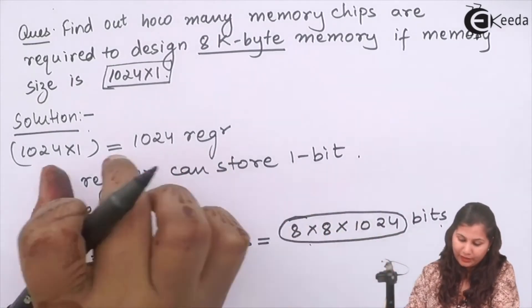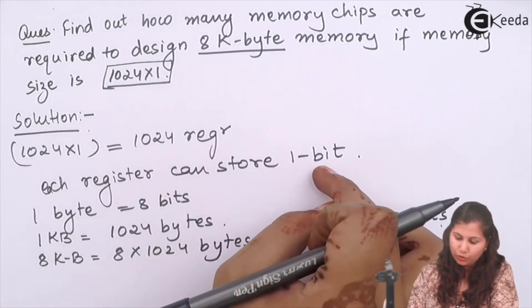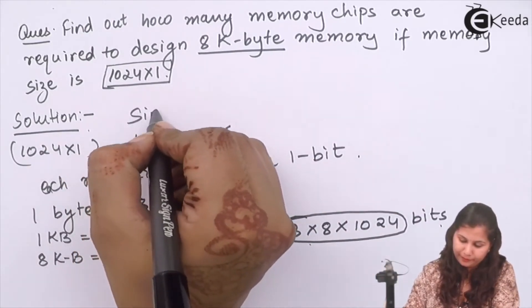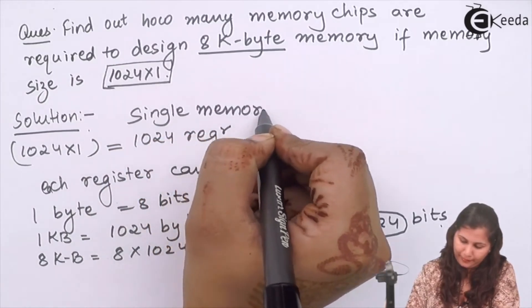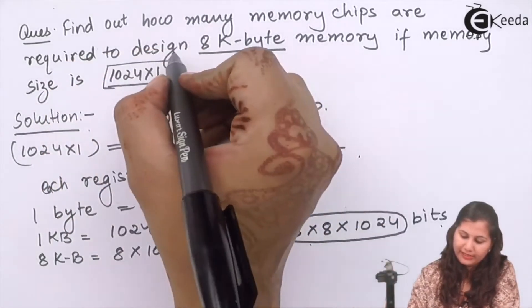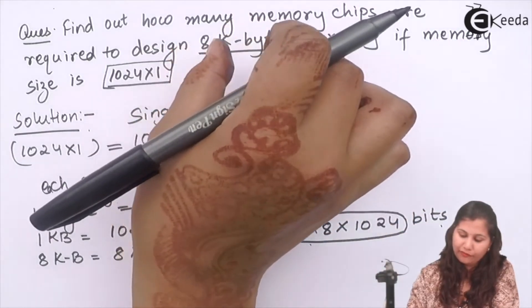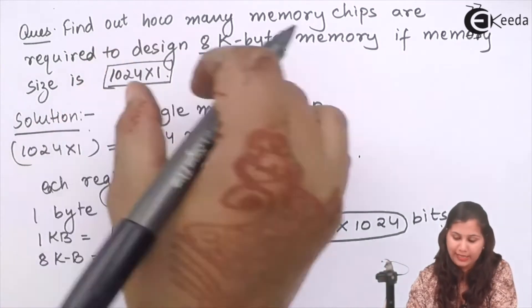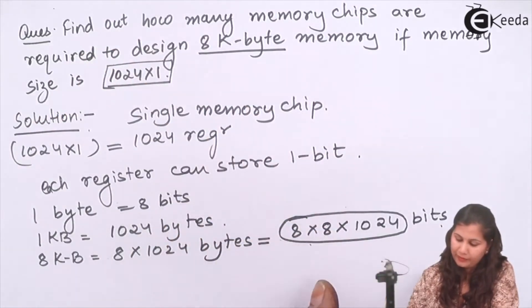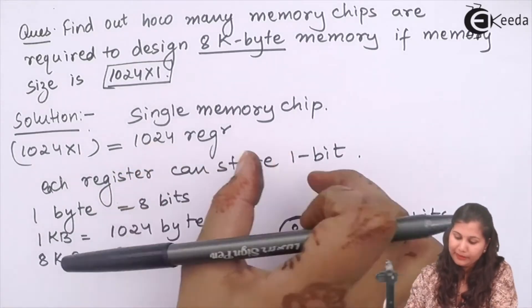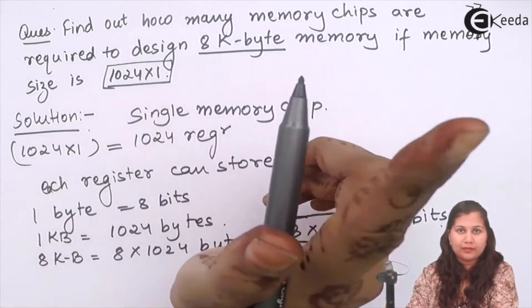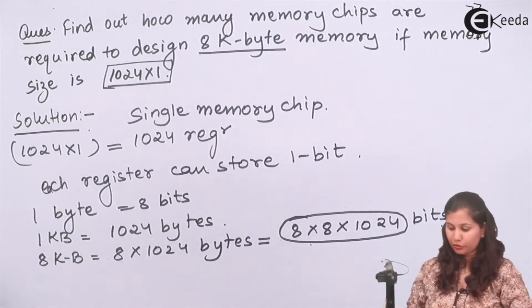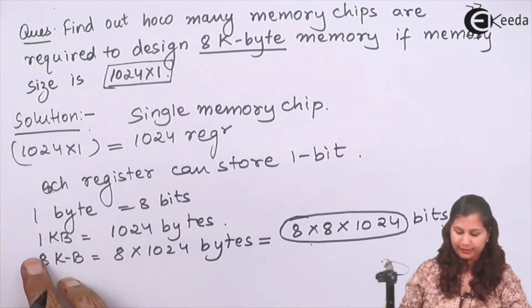We have 1024 registers which can store 1 bit — this is about a single memory chip. We want to design a memory which is of 8 kilobyte, and we have a memory chip of this size. So we have calculated how many bits we want and how many bits a memory chip can store, and now we want to calculate how many memory chips we need.